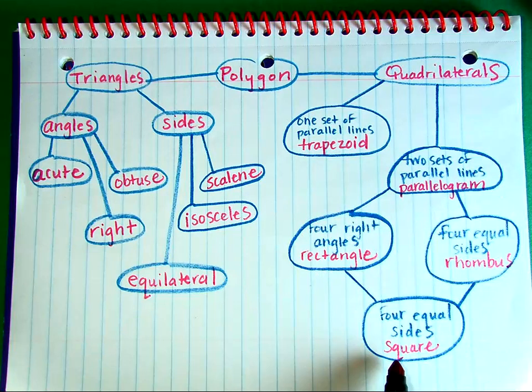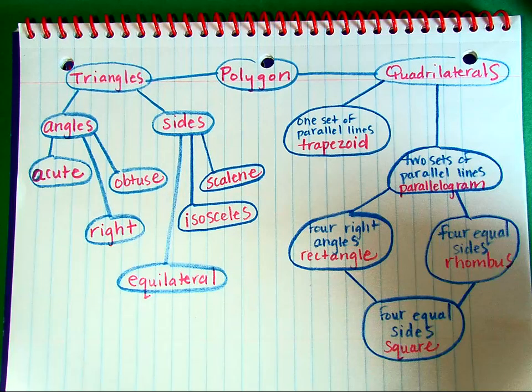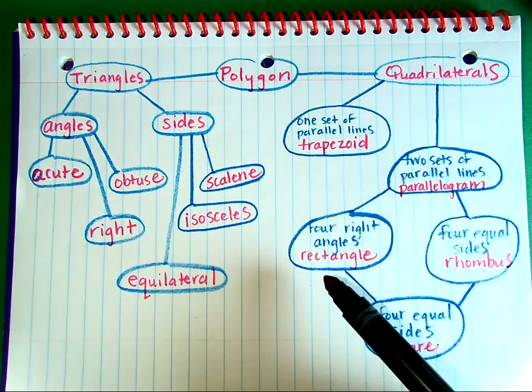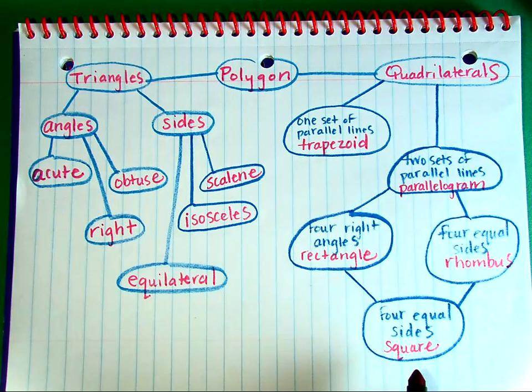Going back up to the parallelograms — if there's a parallelogram that has four equal sides, it's called a rhombus. Notice that a square is an example of a rhombus; it's just a rhombus that's special and has four right angles, so it's also called a rectangle. However, all rhombi are not squares. Some examples of a rhombus include a square, but there are some examples of a rhombus that are not a square.